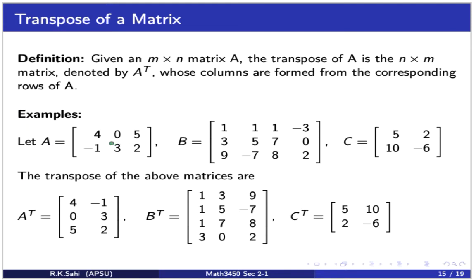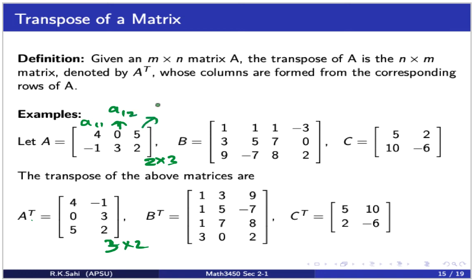Let's look at an example. Matrix A is of size 2 by 3, so the transpose will be 3 by 2. The first row of A becomes the first column of A^T, and the second row of A becomes the second column of A^T. Notably, element A_{13} — for example, the value 5 — is now in position A_{31} of the transpose. The subscripts themselves are swapped, reflecting the row-column interchange.